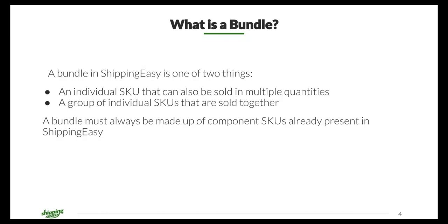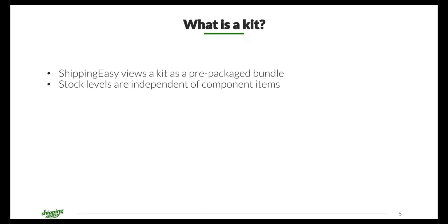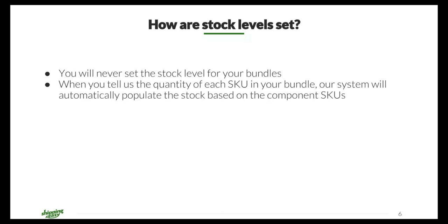This can also apply to products you'd like to sell individually but in multiples, such as a white shirt you sell in a quantity of one but also want to sell in a quantity of five. ShippingEasy will support these groups even if your platform does not, so long as the SKU for the individual product and the SKU for the grouping are set up in ShippingEasy. To clarify, a kit is a group of items that are already packaged — it has its own stock level independent of the component items and is viewed as an individual item SKU within ShippingEasy.